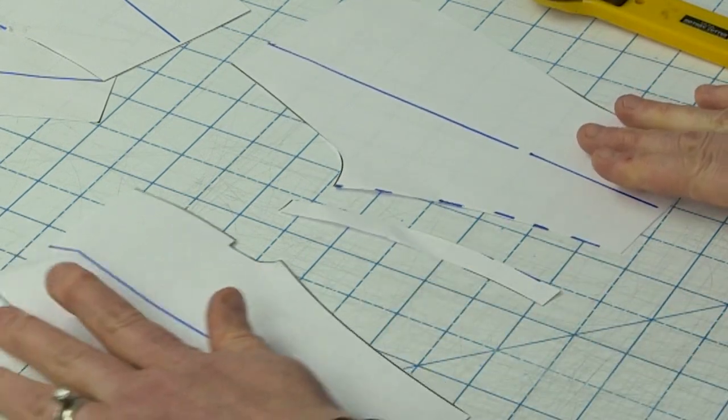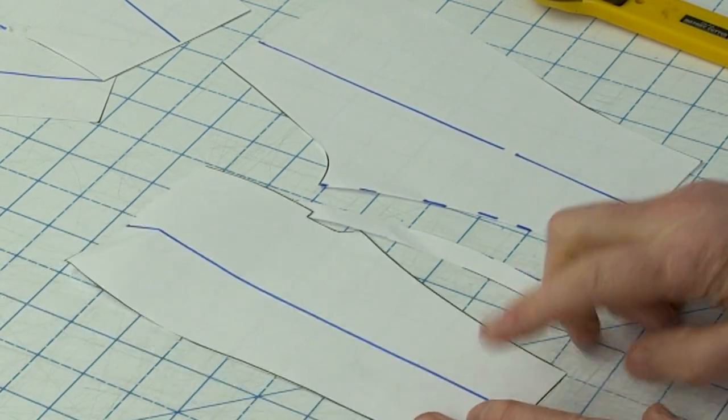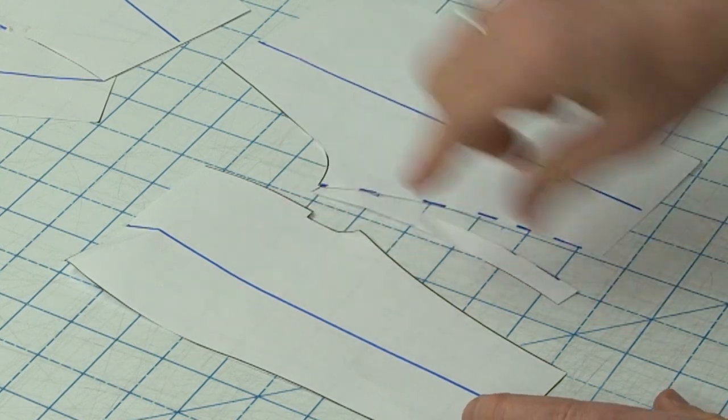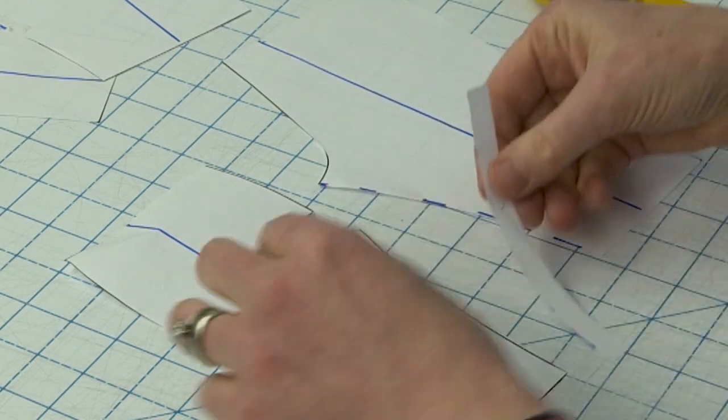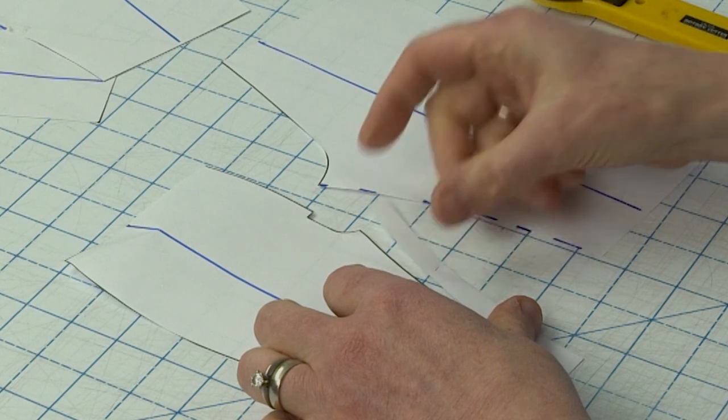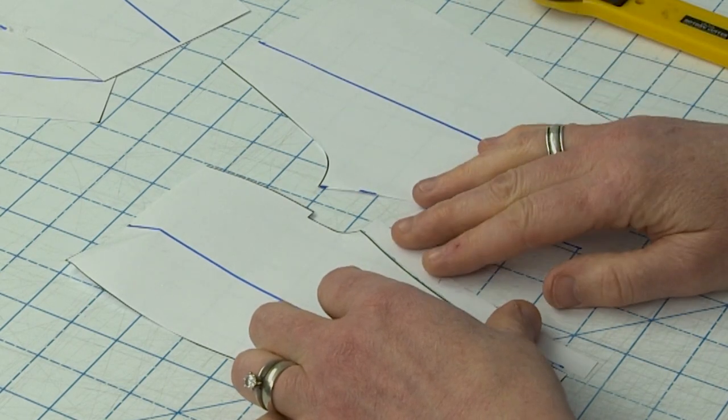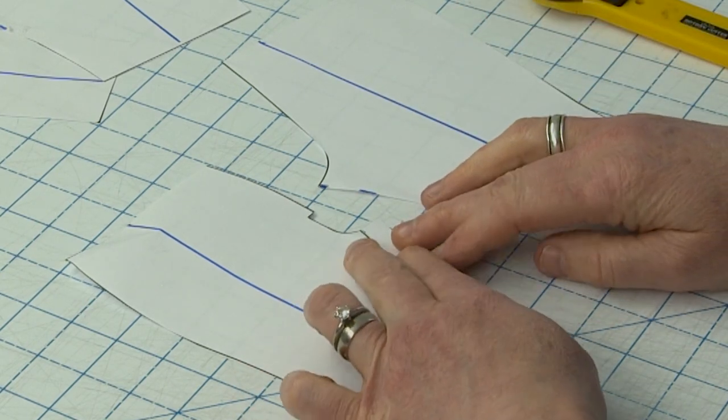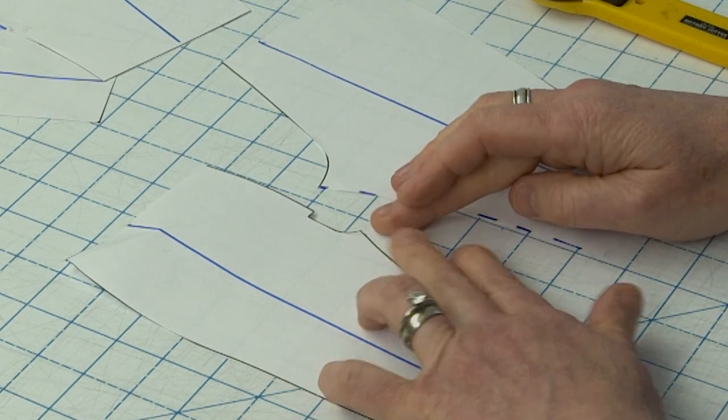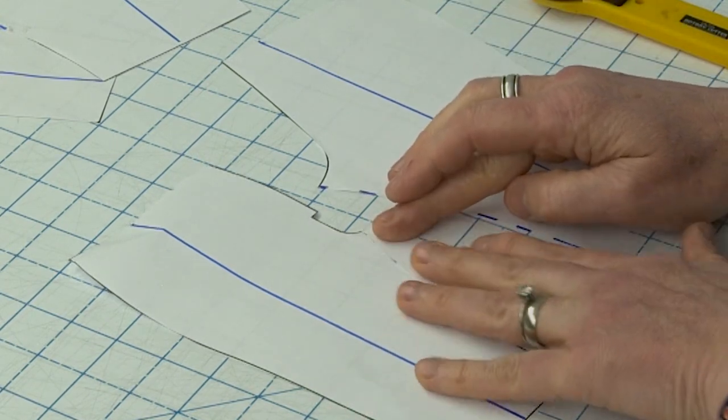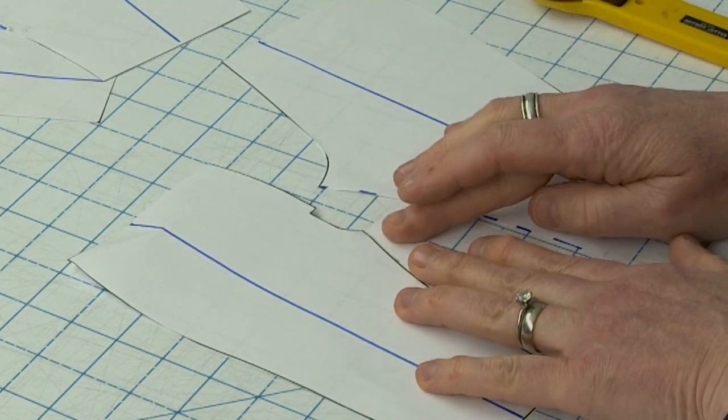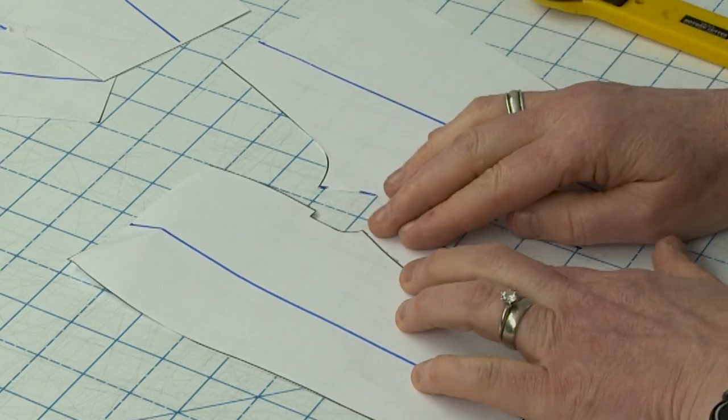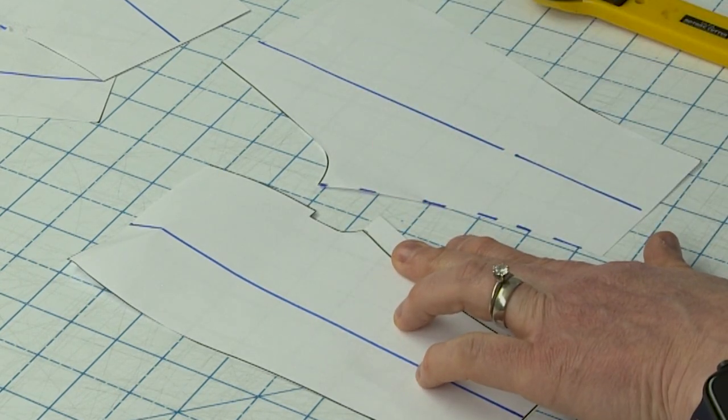And then what I'm going to do is I'm literally going to flip it over and I'm going to tape it to my front. So basically I'm going to butt the cut edge up against the inseam edge and I'm going to tape it on.